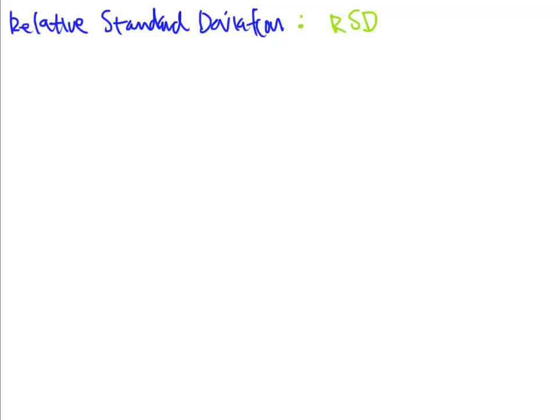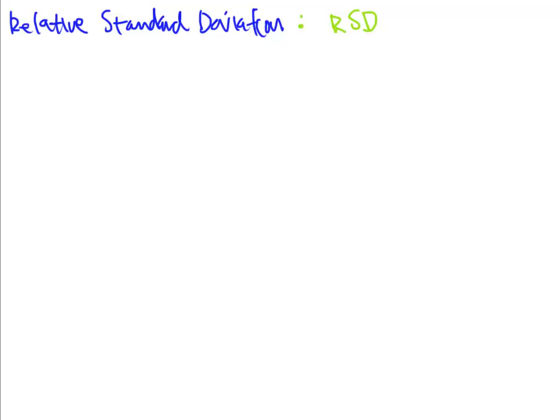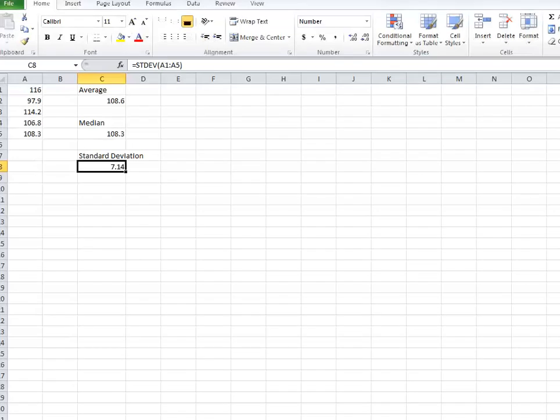Anytime you see RSD as far as part of a calculation is concerned, it's representing relative standard deviation and this is what we do. Very simple calculation to do if you have the pieces and parts already.